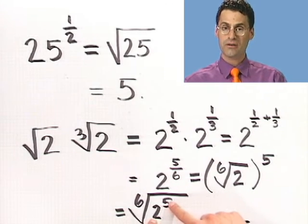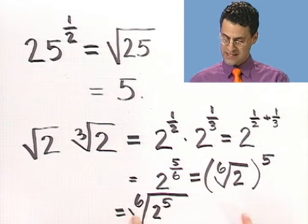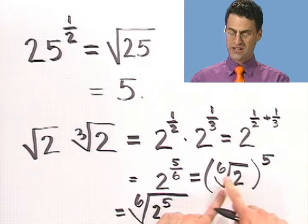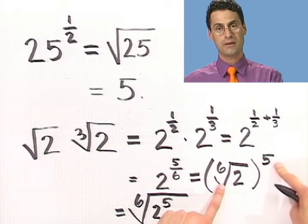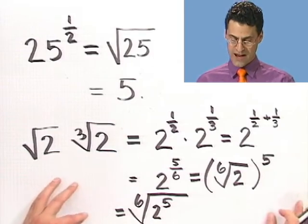And in the second way, or the first way, I should say, first I took the sixth root and then raised it to the fifth power. Those things are actually both the same, and either one works. In fact, this is an example of a very general principle, which I'd like to write down for you.